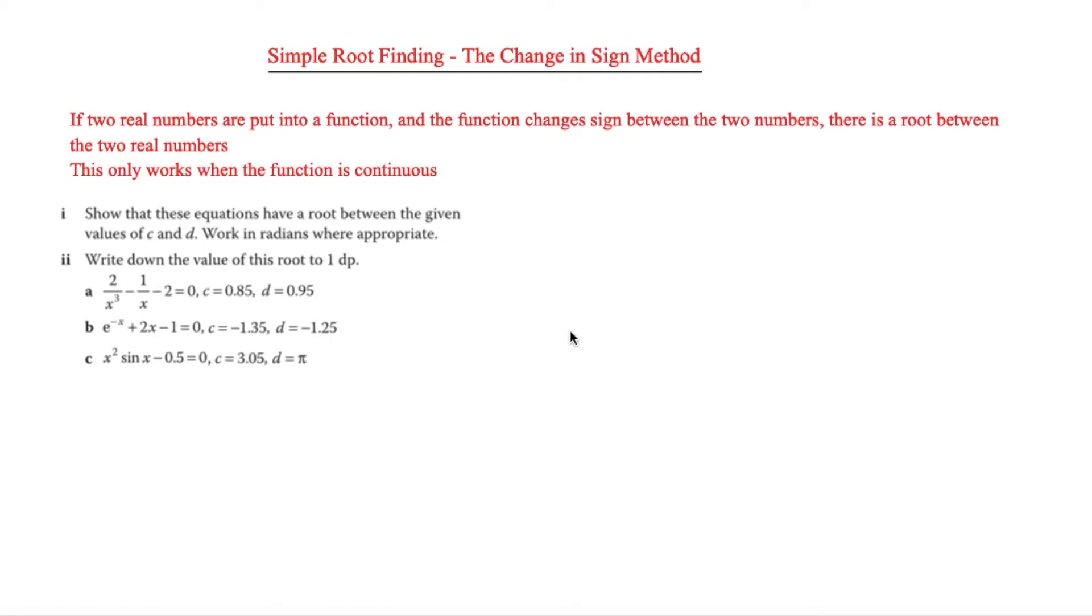In this video we're looking at simple root finding and the change in sign method. If two real numbers are put into a function and the function changes sign between the two numbers, this means there is a root between these two real numbers. This only works when a function is continuous.